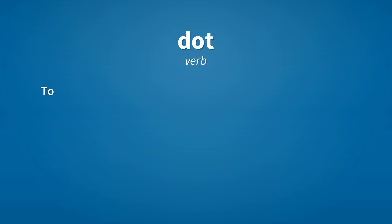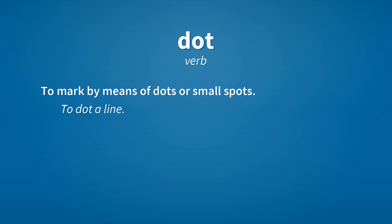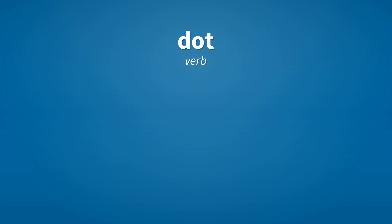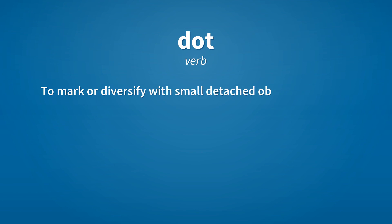Verb. To mark by means of dots or small spots. To dot a line. Verb. To mark or diversify with small detached objects. To dot a landscape with cottages.